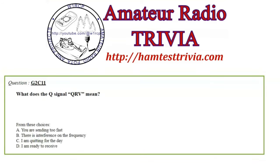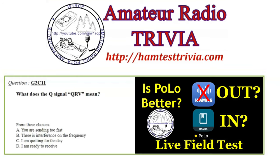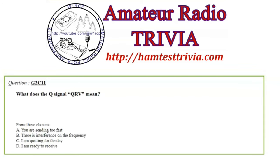The last question: What does the Q signal QRV mean? The Ham2K Polo app actually uses this one when you go to spot yourself. Choices: A) You are sending too fast, B) There is interference on the frequency, C) I am quitting for the day, D) I am ready to receive. The answer is D — I am ready to receive. QRV means you are ready; it is go time.